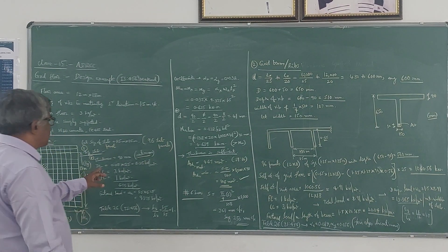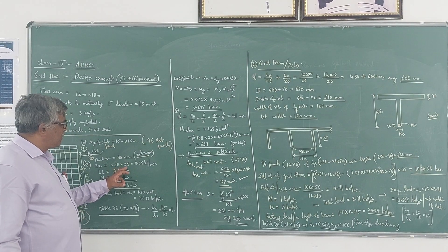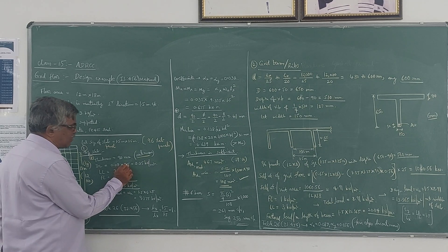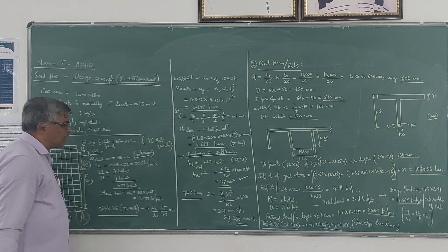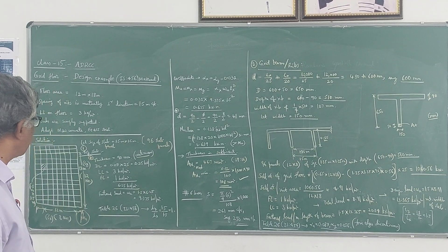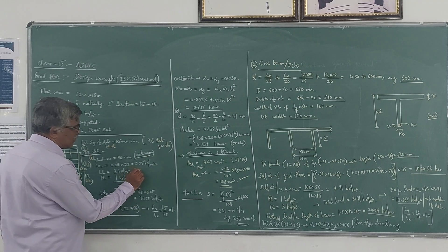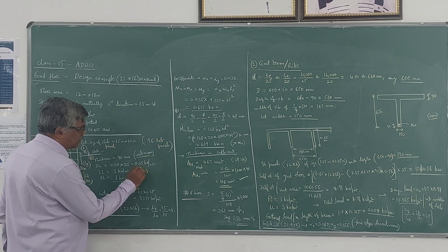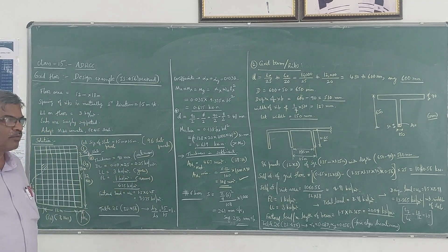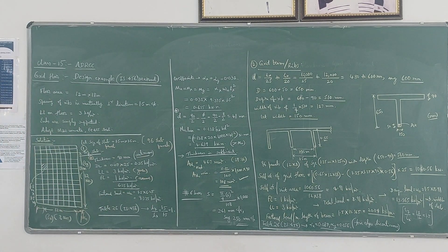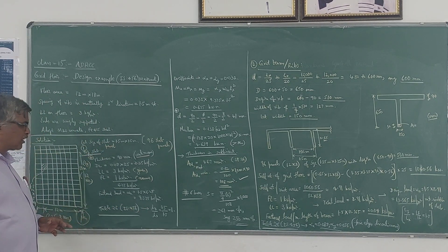The dead load of the panel is 0.09 m (90 mm) × 25 kN/m³ (density of RCC) = 2.25 kN/m². The live load given in the problem is 3 kN/m², and we assume a floor finish of 1 kN/m². Total load = 6.25 kN/m². Factored load is 1.5 × 6.25 = 9.375 kN/m².